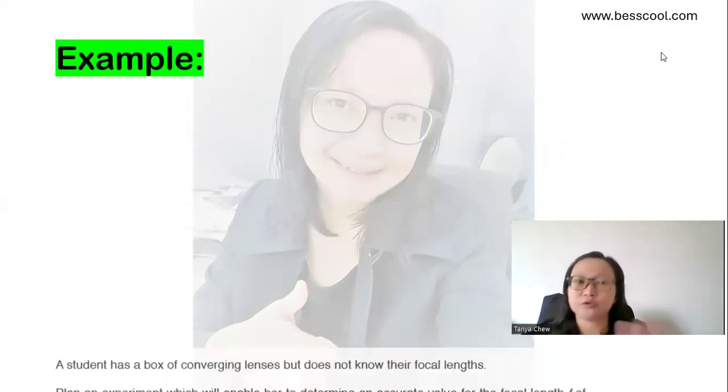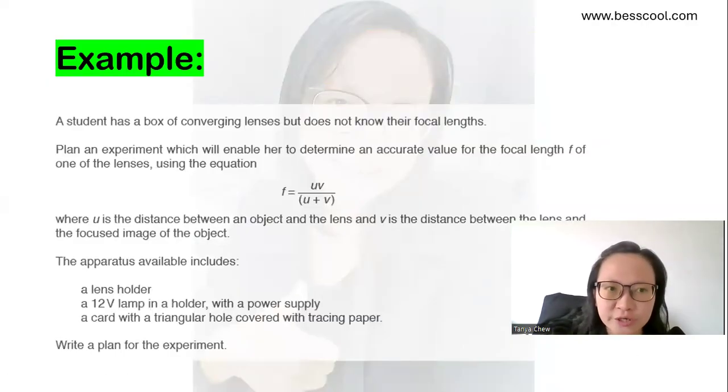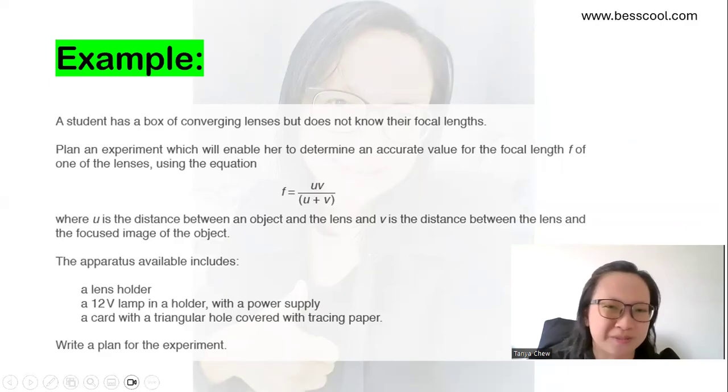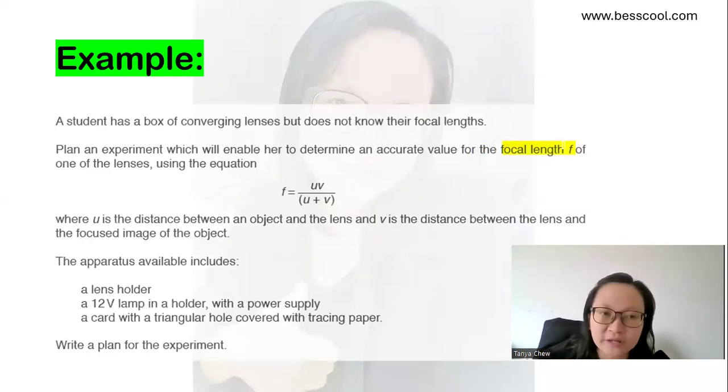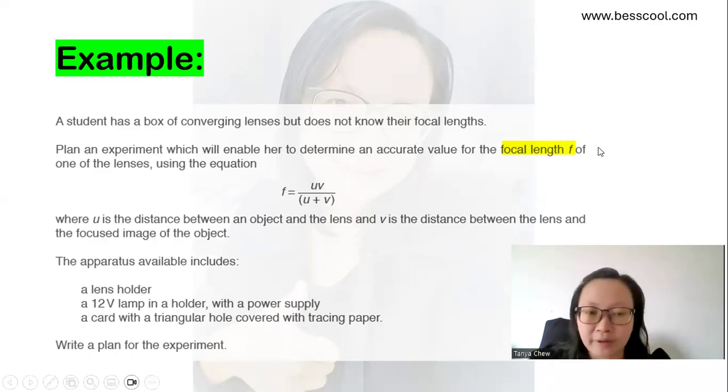So I give you one example to discuss here. This is one of the past questions. A student has a box of converging lenses, but does not know their focal lengths. Plan an experiment which will enable her to determine the accurate value for the focal length F of one of the lenses using the equation given here, where U is the distance between an object and the lens, and V is the distance between the lens and the focus image of the object. The apparatus available includes a lens holder, a 12-volt lamp with a holder with a power supply, a card with a triangular hole covered with tracing paper. Write a plan for the experiment.